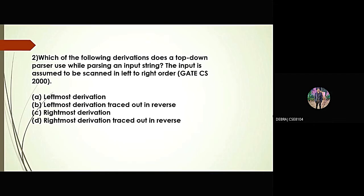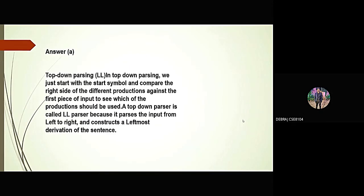Good evening, everyone. Good evening, sir. Moving to the second question, which came in the GATE 2000 examination: which of the following derivations does a top-down parser use while parsing an input string? The input is assumed to be scanned in left to right order. In top-down parsing, we start with the start symbol and compare the right side of the different productions against the first piece of input to see which production should be used. The LL parser is called a top-down parser because it parses input from left to right and constructs a left-most derivation of the sentence.